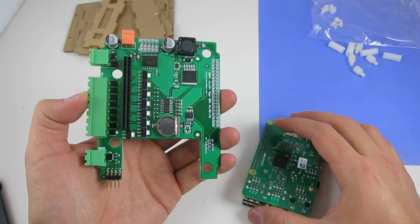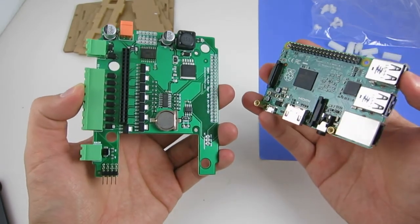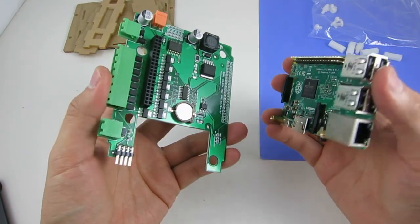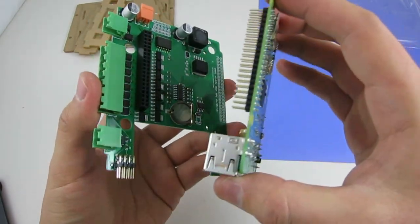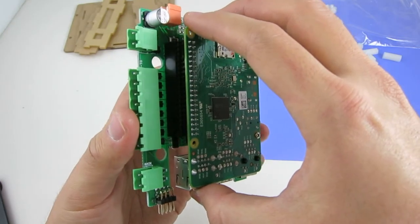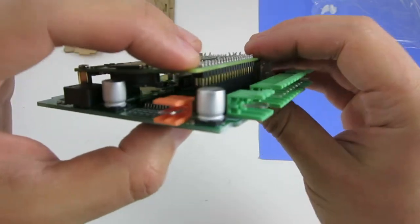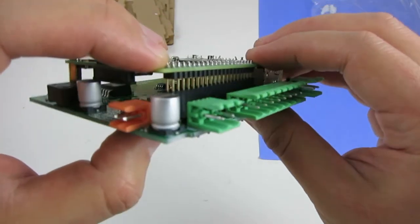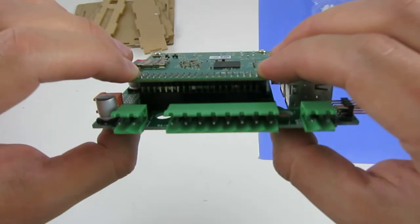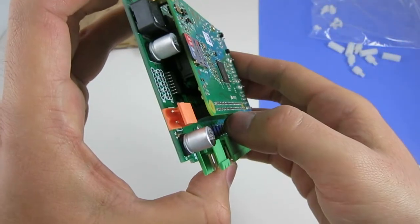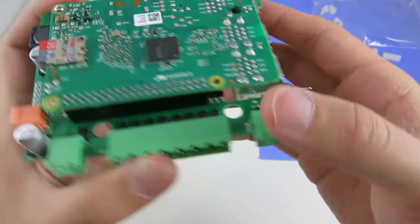The first step is to assemble Raspberry Pi with OpenSprinklerPie. This will make it easy to align the support pillars later. To do so, plug the Raspberry Pi into OpenSprinklerPie and make sure that all the pins match each other and there's no misalignment, then firmly press the Raspberry Pi all the way down to OpenSprinklerPie.